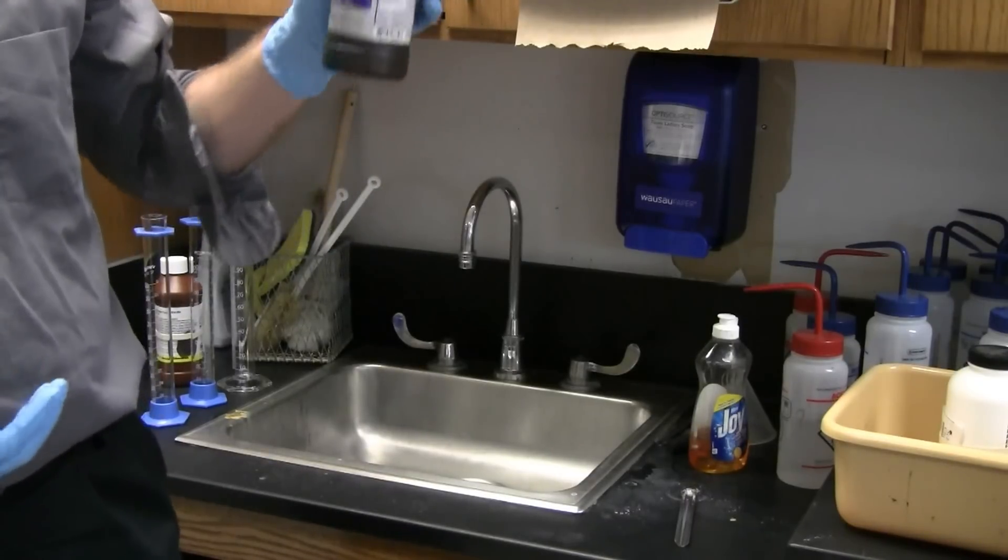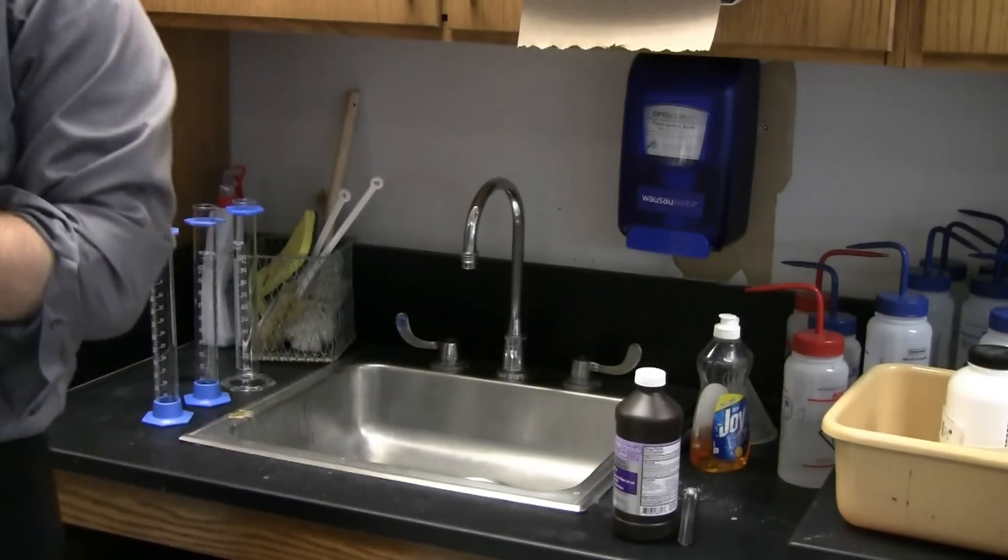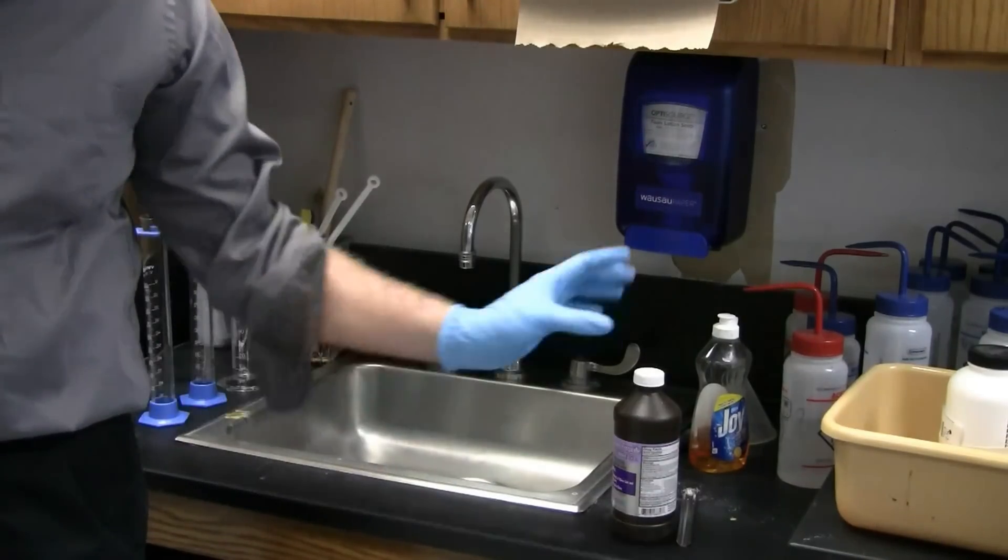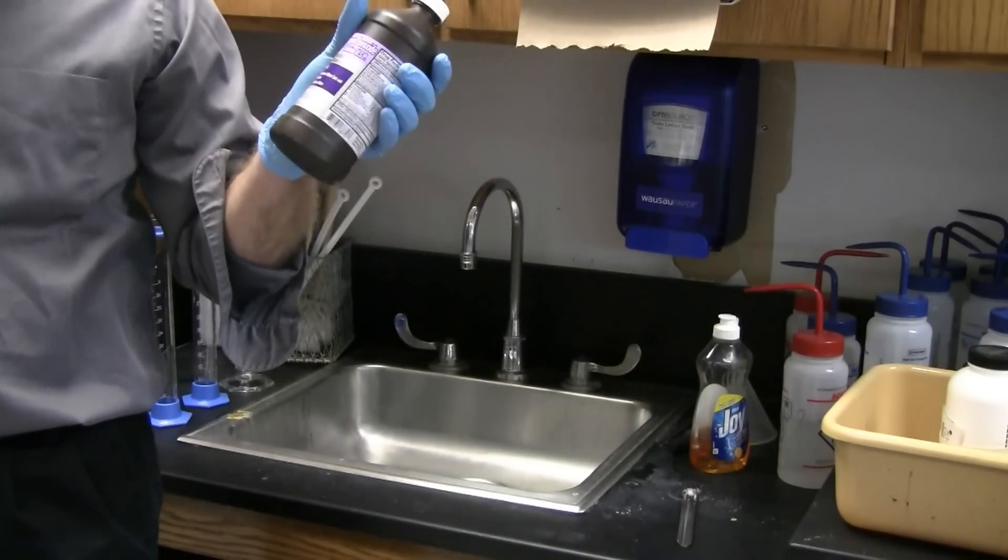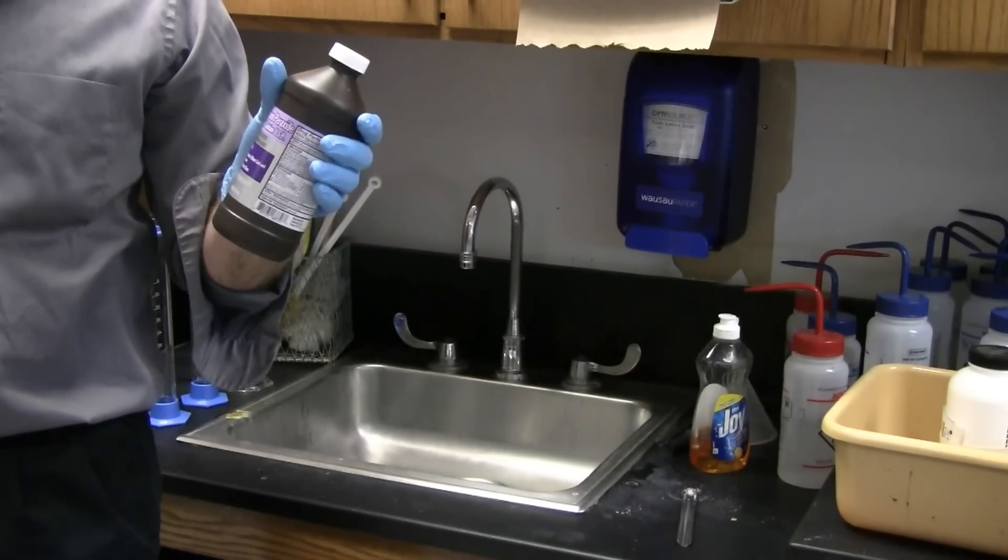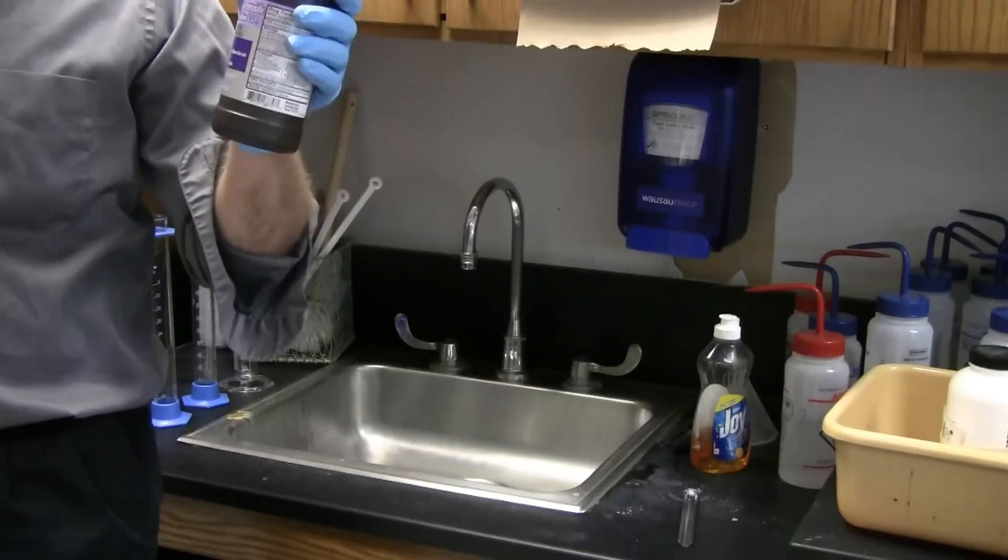So that's the common 3% variety. We also have 30%, which is a little bit more concentrated. So if this is 3% hydrogen peroxide, that means it's 97% water. 30% hydrogen peroxide is 70% water. So you can see these are a little bit different compositions.